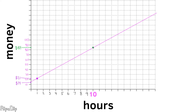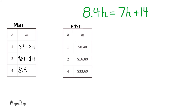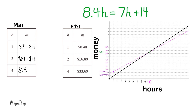Priya's line starts at the origin, running straight through the point at 10 hours and $84. The black line represents Priya. Finally, we return to the equation: 8.4H equals 7H plus 14. 8.4H represents Priya at $8.40 an hour, and 7H plus 14 represents Mai — $7 per hour plus $14 for hauling away recyclables. Here's a look at all three: the chart, the graph, and the equation.